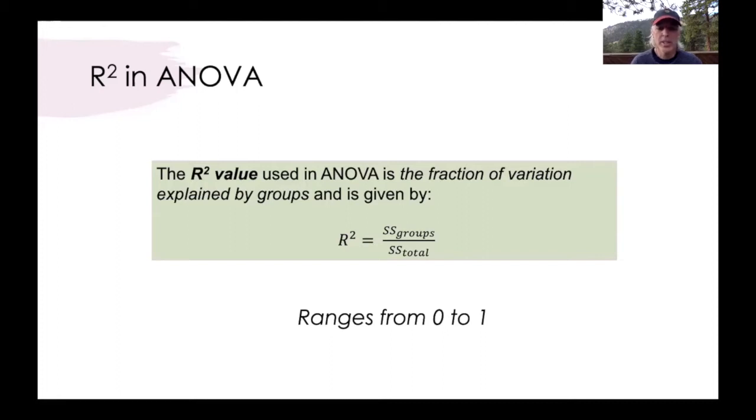As a proportion this value ranges between zero and one. When none of the variation is explained by our differences among groups then the R-squared is zero. When all of the variation is explained by variation among groups then our R-squared is one.